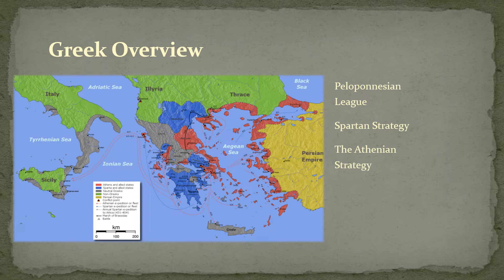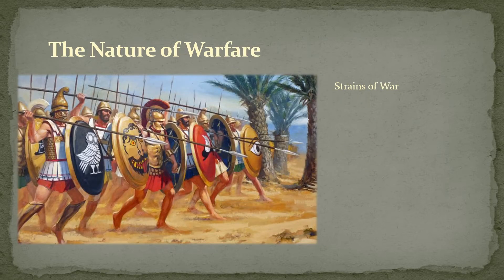Unfortunately for both parties, they were wrong in their calculations that the other side would give up. The Peloponnesian War turned into a very long and costly war. Typically, wars among the Greeks had been relatively quick affairs — one city-state crashes into another for a quick decisive encounter and the war is over. But this war was going to last for almost 30 years, far longer than the brief wars the Greeks were accustomed to.